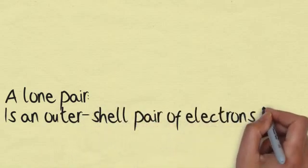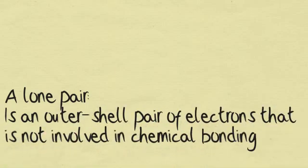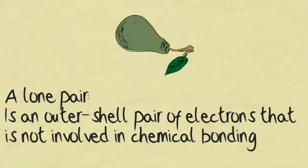A lone pair is an outer shell pair of electrons that is not involved in chemical bonding.